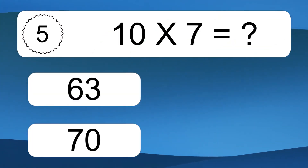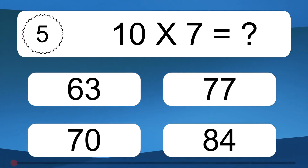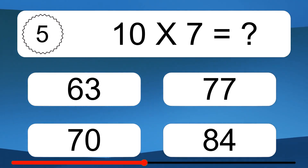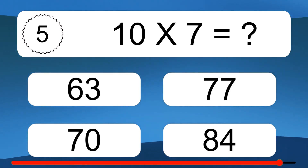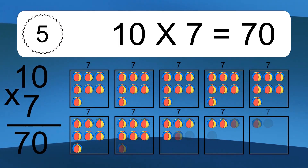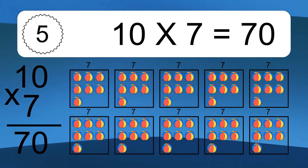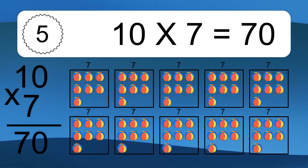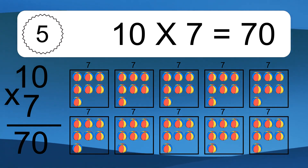10 times 7 equals what? 10 times 7 equals 70. We have 10 boxes, and each box has 7 colorful balls inside. If you count all the balls in all the boxes together, you will have 10 times 7 balls. This equals 70 balls.